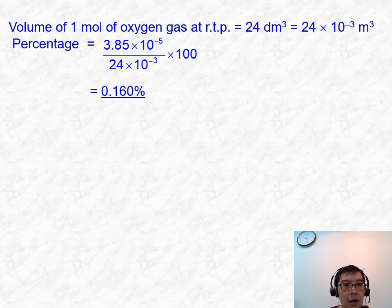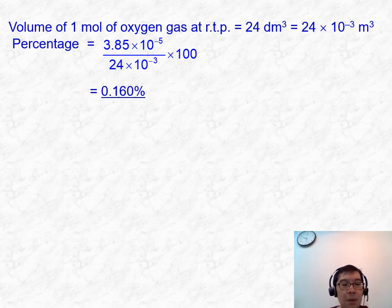We will now calculate the volume of one mole of oxygen gas at RTP, making use of knowledge from moles and stoichiometry. One mole of any gas occupies a volume of 24 dm³ under 298 Kelvin and 1 atm. Taking 3.85×10⁻⁵ over 24×10⁻³ times 100, we get a very small percentage of 0.160% to 3SF.